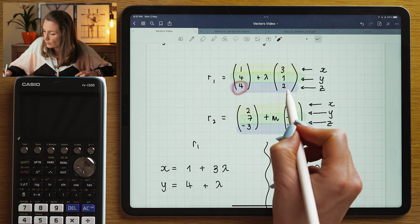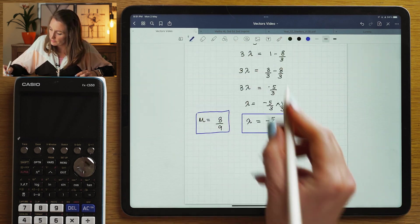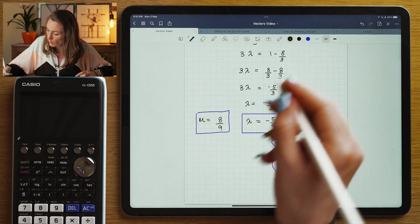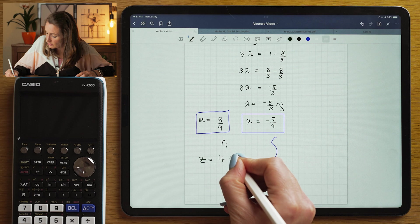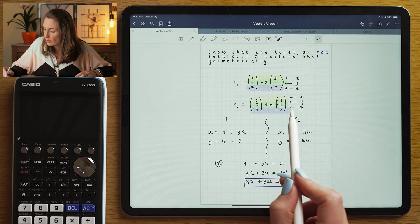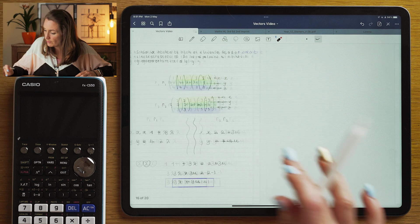So my equation for z would be 4 plus 2 lambda. So let's check it. This will be R1, so the z-coordinate should be 4 plus 2 lambda. If I look at R2, it should be minus 5 minus 5 mu.